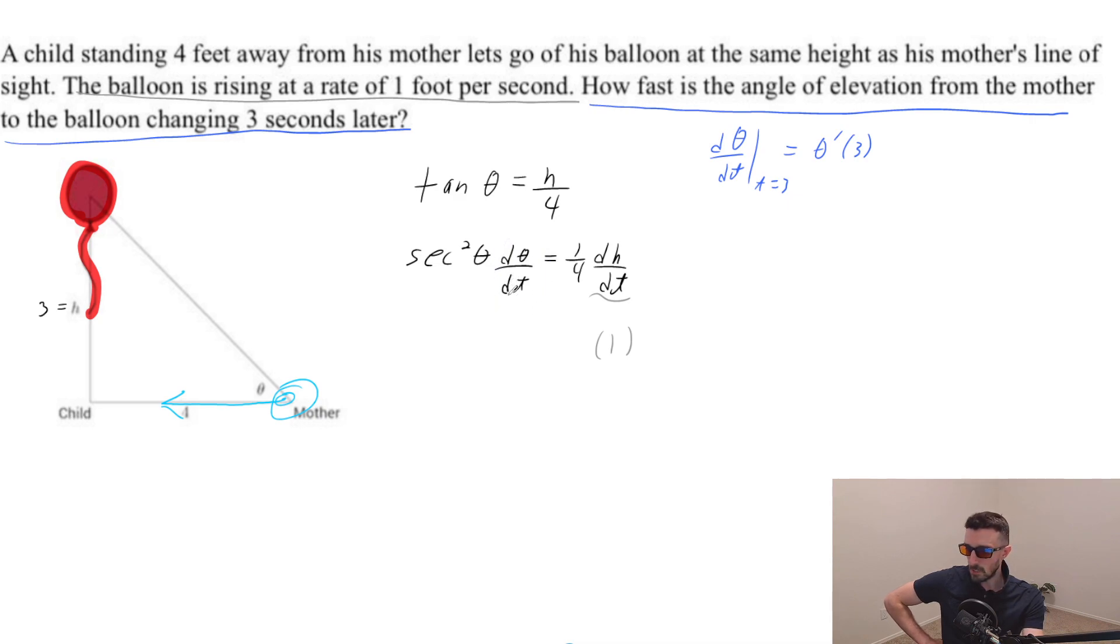Well, when t equals three, that would mean that I would be able to figure out the secant theta then. So the secant of theta is the same thing as saying the hypotenuse over the adjacent.